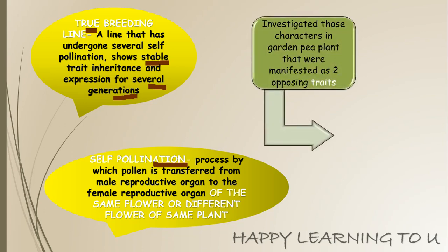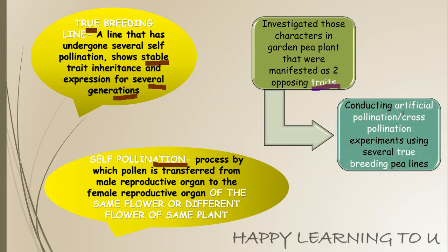Now I'll explain the experiment I mentioned in the previous slide in terms of definitions. His hybridization experiments investigated those characters in the garden pea plants which were manifested as two opposite characteristics, by conducting artificial pollination — that is, by manually transferring pollens from the male reproductive organ of one plant to the female reproductive organ of the other plant — using a line that has undergone several self-pollinations and shows stable inheritance of the traits.